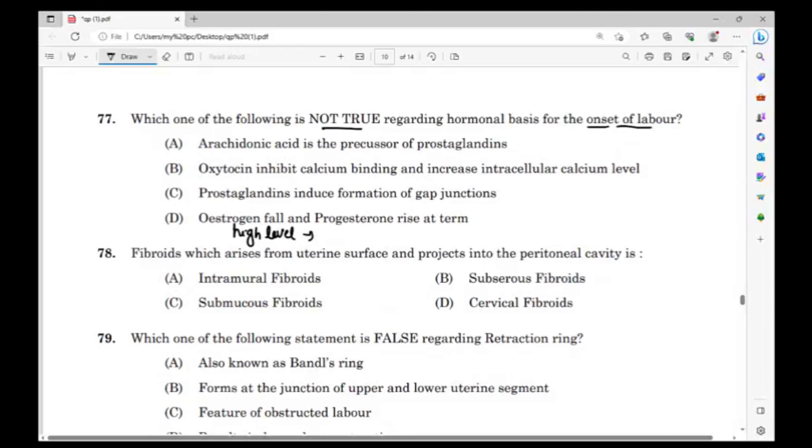High level estrogen leads to oxytocin release. Oxytocin release, then myometrial contraction. Oxytocin release and prostaglandin release. Prostaglandin release - high level estrogen produces oxytocin and oxytocin release prostaglandin that will lead to softening of the cervix. Cervix softens out.